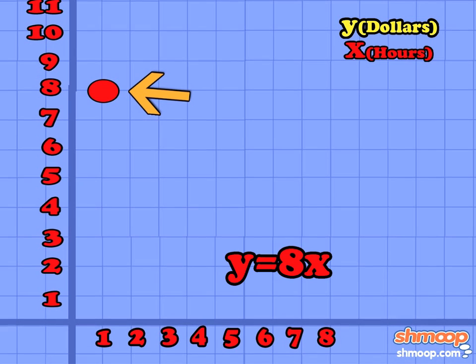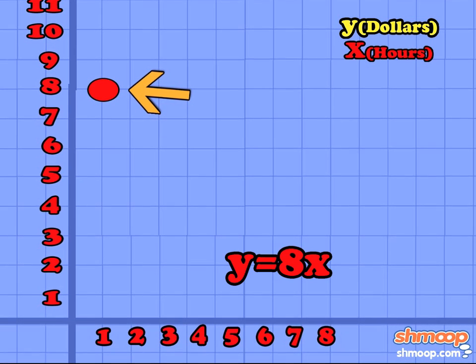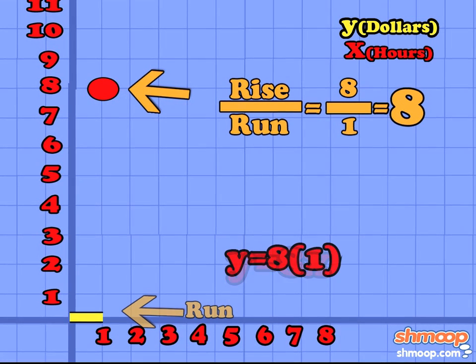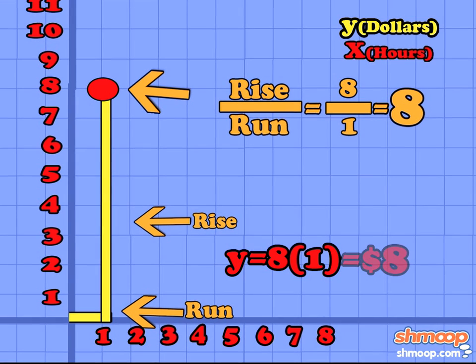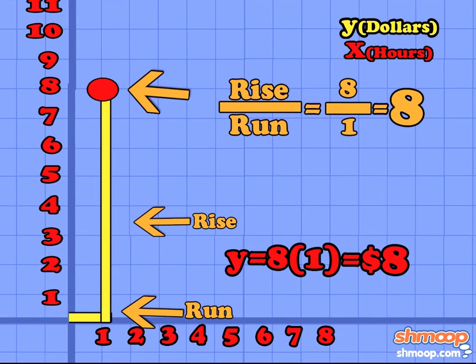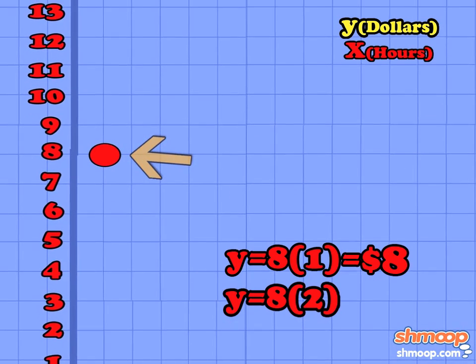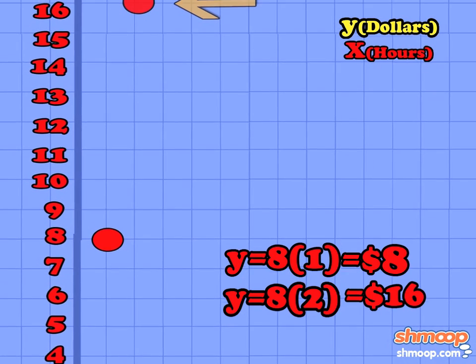The equation of the line would be y equals 8x, and every hour that passes x, he earns eight more dollars, which is reflected in his total dollar amount, y.